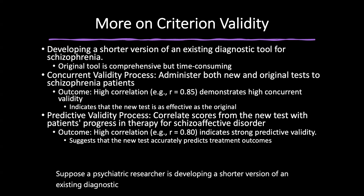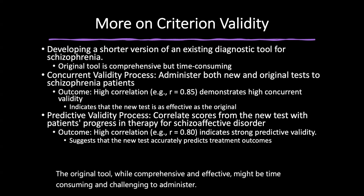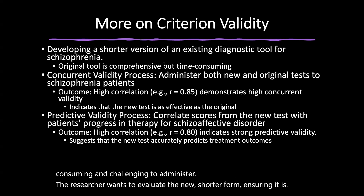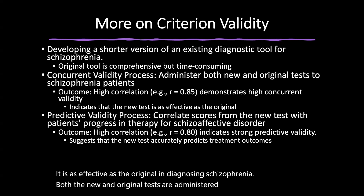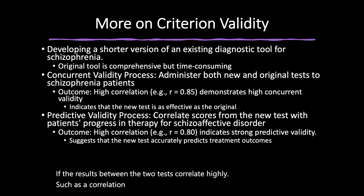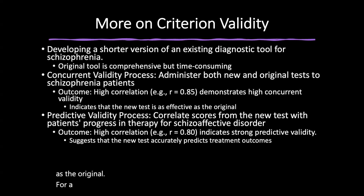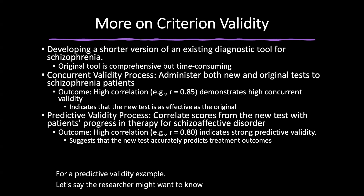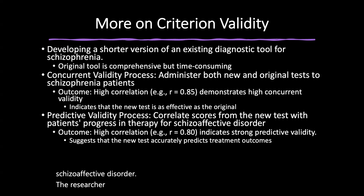Confirmation bias is another challenge: if the new measure and the gold standard are biased in the same way, they might falsely confirm each other's validity. The solution is utilizing a diverse set of validation methods and ensuring tests are reviewed by a broad range of experts. Temporal issues arise in predictive validity because time must pass between test administration and observation of the criterion variable, making the process lengthy and susceptible to intervening variables — requiring careful study design and robust statistical methods. Generalizability is also a concern, as validity established in one population or setting may not apply to others.